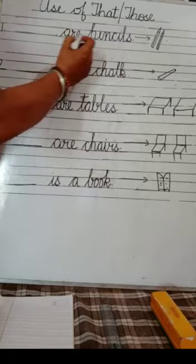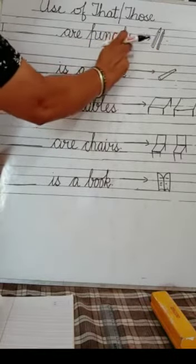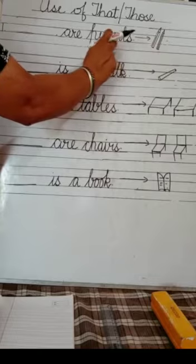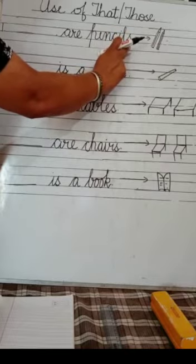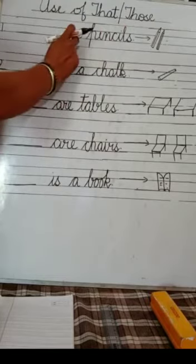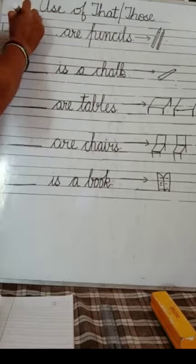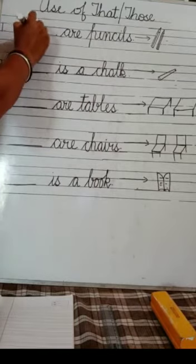Dash are pencils. Pencils, you can see here. One and many. Pencils means plural form. Two pencils are there. Dash are pencils. So when there are more pencils, those, you will write. Those are pencils.